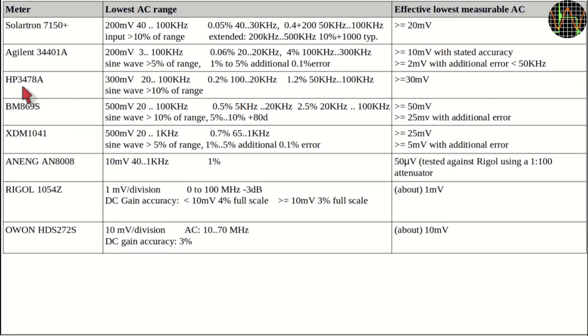The HP3478A needs to see at least 30 mV. The Prohymen 869S at least 50 mV, or possibly only 25 mV but then with an 80 digits uncertainty added, which kind of makes this lower limit not very practicable. The OwOn XDM1041 seems to be better with 25 mV nominally and as little as 5 mV with an additional error factor, until you realize it is limited to 1 kHz only.